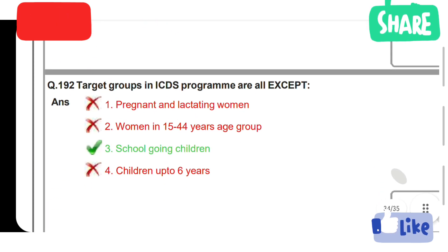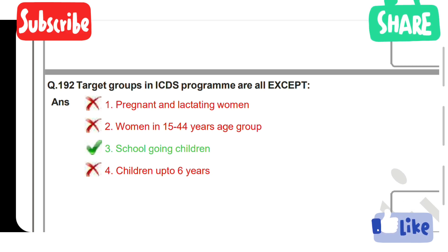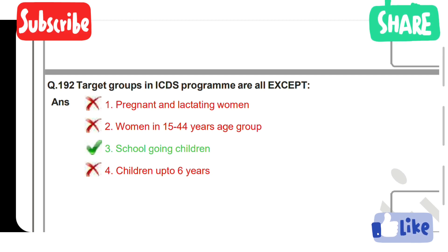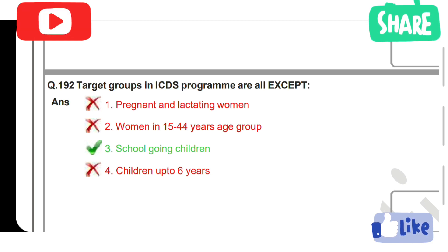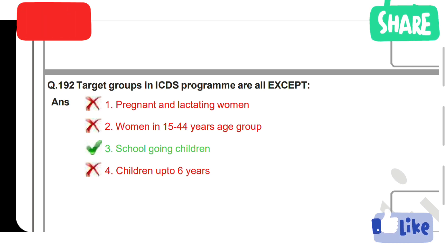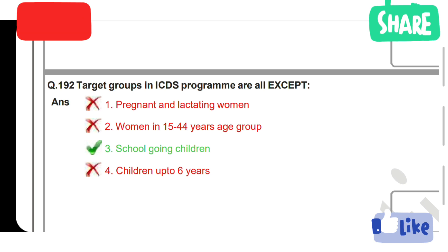Next question: Target groups in ICDS program — all except. Option 1: Pregnant and lactating women. Option 2: Women in 15 to 44 years age group. Option 3: School going children. Option 4: Children up to 6 years. Option 3 is the correct answer — school going children is the correct answer, as school going children are excluded from the ICDS program.